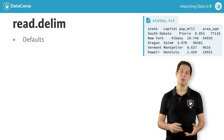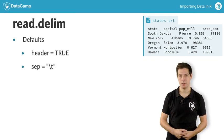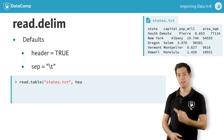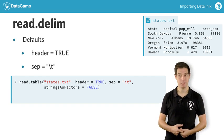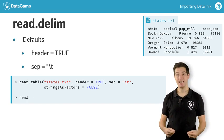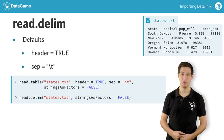Likewise, read.delim sets the header and sep argument, among some others. This call to import the tab-delimited version of states is exactly the same as this read.delim call.